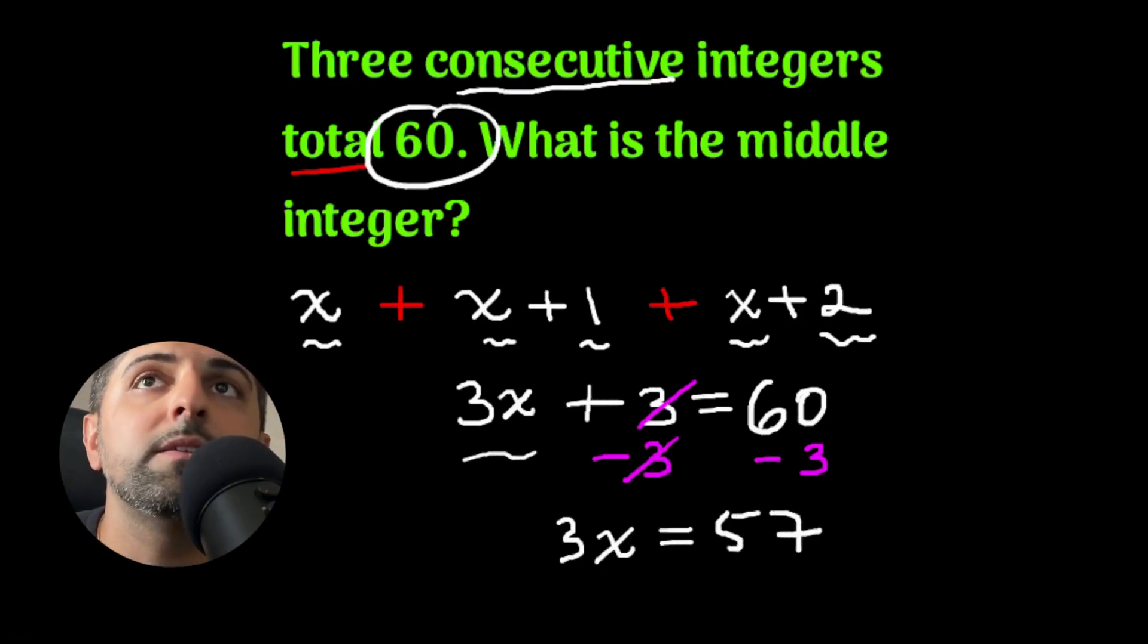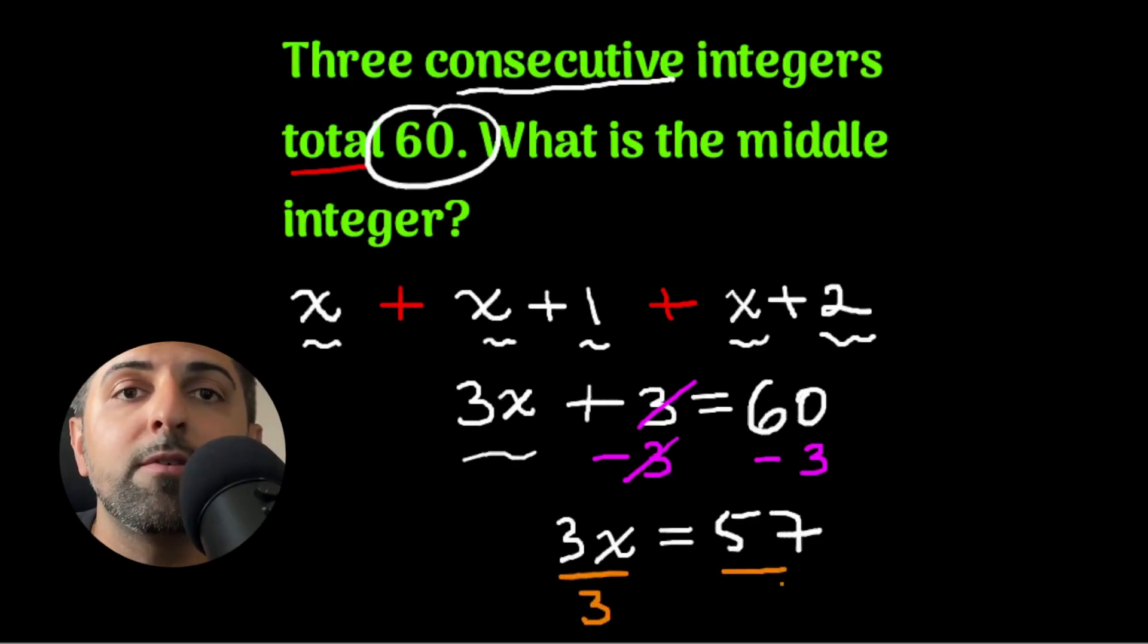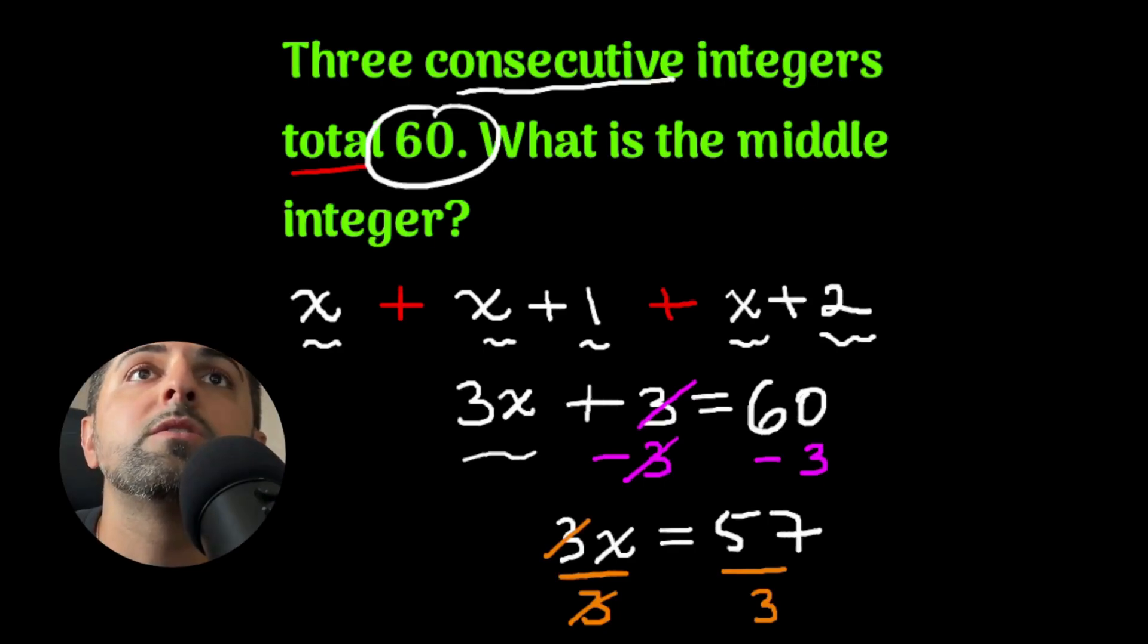And finally, to isolate for x, I divide by 3, and I get 57 over 3 equals x. So if x is 57 over 3, I divide out those two numbers. I get a whole number of 19.